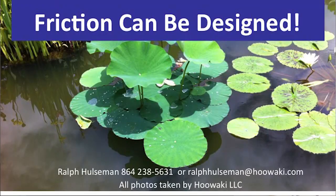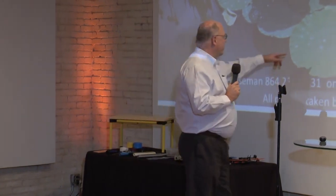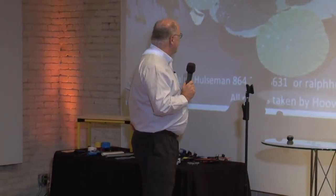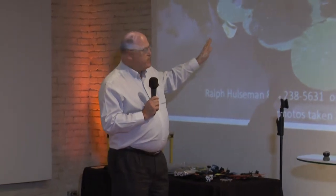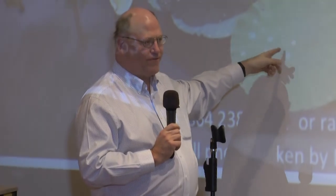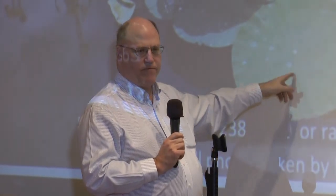The picture you see here was taken up in Asheville. It's a pond full of lotus leaves covered with little water droplets. The day I was up there taking this picture, it was a bit windy. The leaves were shaking back and forth and the drops were perfectly still — just rolling back and forth. So little friction between that leaf and that water droplet that it could just rock back and forth.